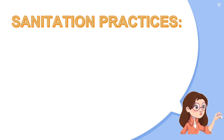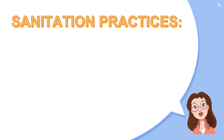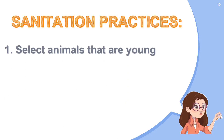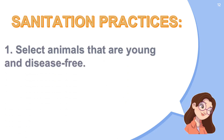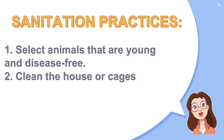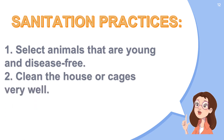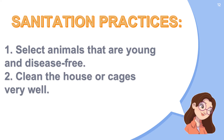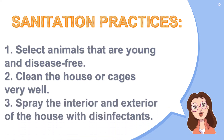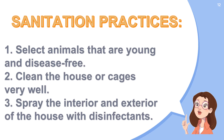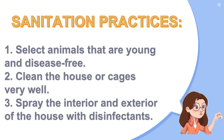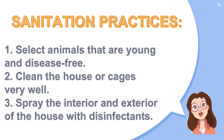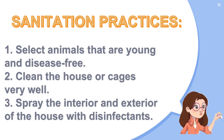These are the following things that you have to keep in mind. First, select animals that are young and disease-free. Second, clean the house or cages very well and sanitize the water containers and feeding troughs. Third, spray the interior and exterior of the house with disinfectants. Disinfectants are chemical substances that kill parasites and disease-carrying germs.